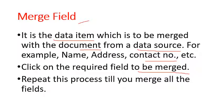For example, from the data source we have name, address, phone number, city, state — but we may choose to merge only name, address, and contact number, leaving out city, state, or mail ID. We repeat this process till we merge all the required fields. You go into merge fields and merge them one by one.